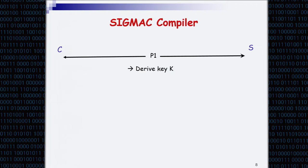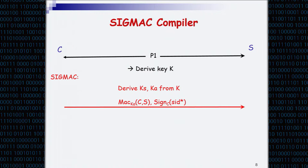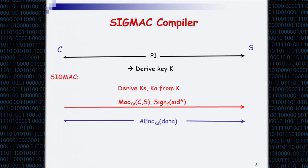Pictorially, we start with P1 that derives key K. SIGMAC takes K, derives two keys — a session key and an authentication key — and computes the MAC. The MAC is computed on the two identities: the client identity and the server identity, while the signature is computed by the client on some subset of the transcript. Then they use key KS as the session key — in TLS this protects the record layer data, but this is not necessarily useful only in TLS.